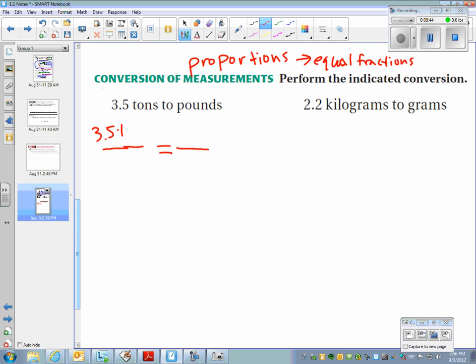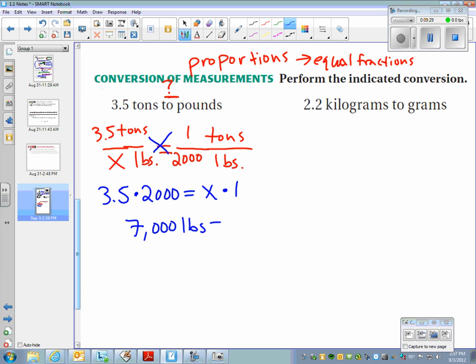So what we do here, 3.5 tons. So we write that on top. We don't know how many pounds it is. That's what we're trying to figure out. So we put an X at the bottom. And then we look over here. We keep the units the same. How many pounds are in one ton? We think to ourselves, we Google it. It's in our textbooks. We find that it's 2,000. So what we do here is we cross multiply. 3.5 times 2,000 equals X times 1. So multiply those and we get 7,000 pounds equals X. That's what we wanted. So that is our answer. Proportions, proportions, proportions, proportions. That's what we're doing.